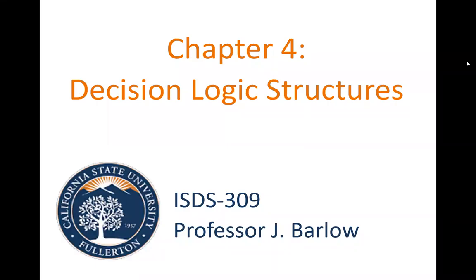In this chapter, we're going to be talking about decision logic structures — in other words, what to do if your course of action in your application needs to be different depending on some conditions. Not every application is going to run the exact same every time you open it. I'm going to use a running example of an application that calculates an employee's bonus, which will be different depending on input factors such as hours worked or number of sales.